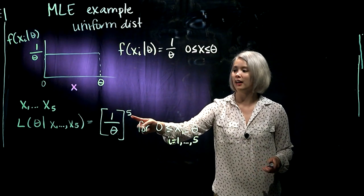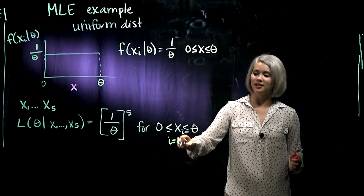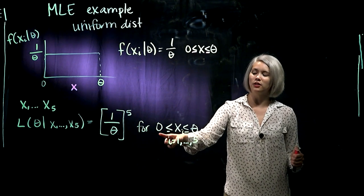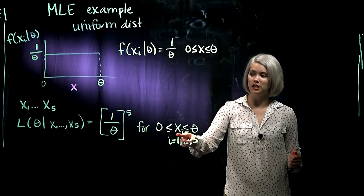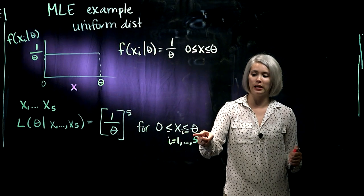So we have 1 over theta to the 5, as long as we have 0 less than or equal to each of these x's less than or equal to theta.